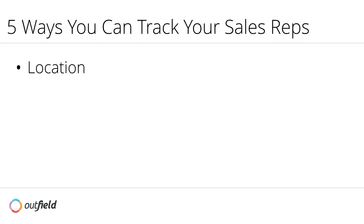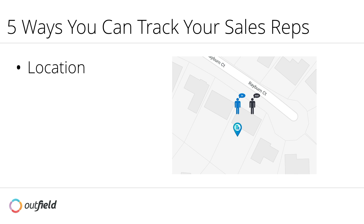The first approach is by location. With every check-in, Outfield geotags where your rep was when they started their visit and where they were when they finished. Check this map out. The blue pin is the customer's address and the two little guys standing next to it are your reps' starting and ending locations. Notice how they're relatively close to each other — this tells us that our rep was definitely at the location.